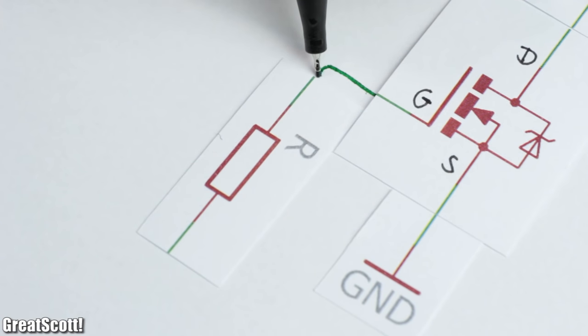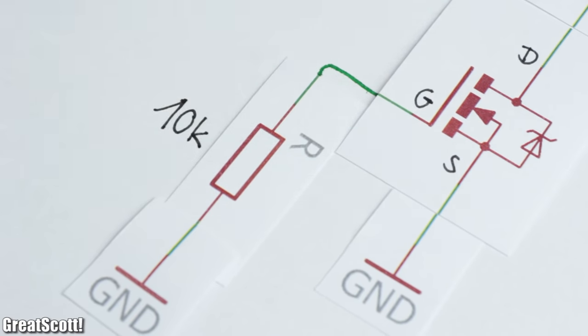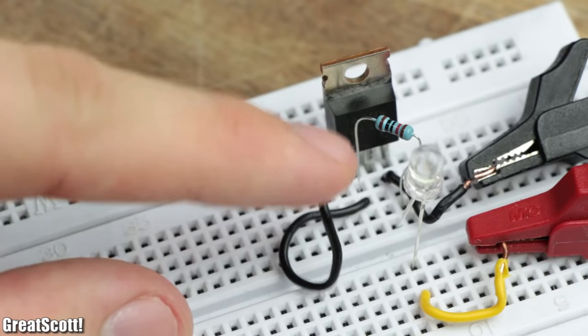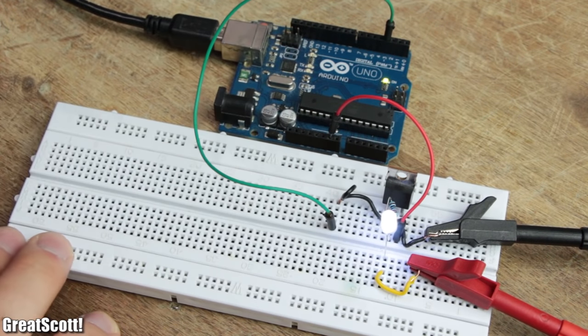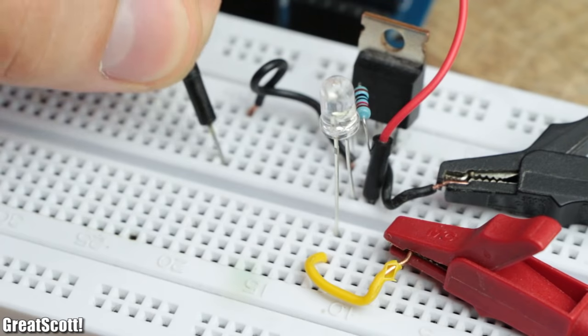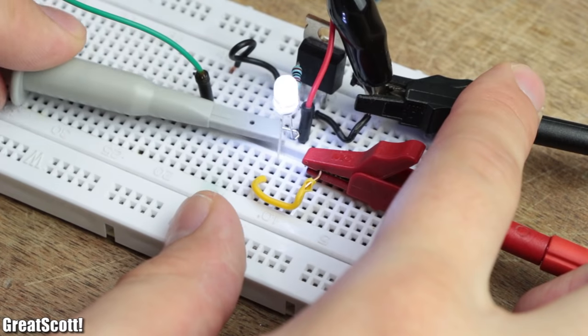So it is always a good idea to place a 10 kilo-ohm pull-down resistor between gate and source in order to prevent that. And after directly connecting the PWM signal of the Arduino to the gate, the circuit was complete and does work the way it is supposed to.